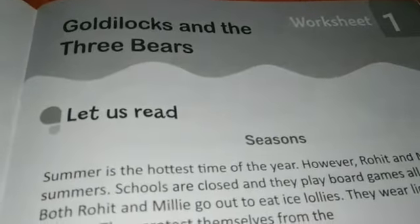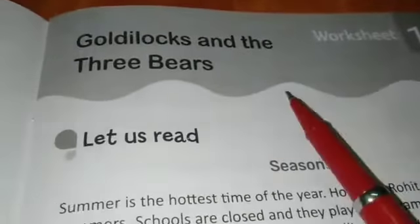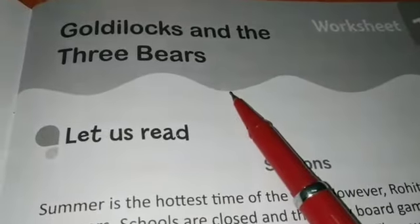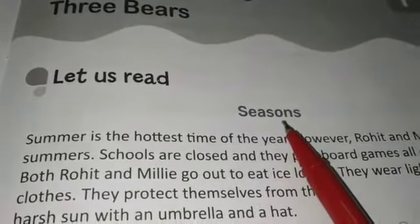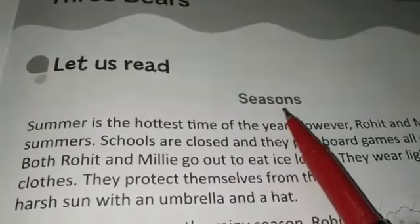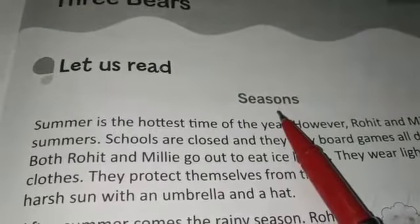Let's begin the first worksheet. The name of the first worksheet is 'Goldilocks and the Three Bears.' Here you can see a short paragraph about seasons. Do you know the different types of seasons — summer, rainy, autumn, winter, and spring? You have to read this paragraph and answer the questions given on the next page. Try to find the answers by yourself.